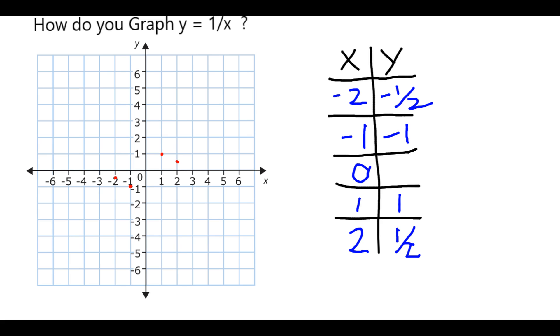For example, negative 2, 1/2 we can see over here. But with those four points, it doesn't really give us that much of an idea of what's going on.